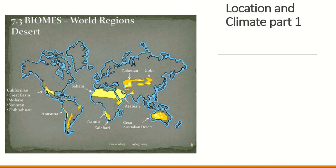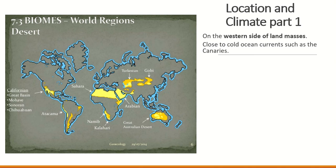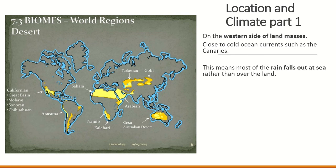So we've finished our introduction into the desert biome. We are now going into our second paragraph, which is on climate. We're going to talk a little bit about location as well. We're not going to do all of the location and climate today but we're going to do part one of it. So where can deserts be found? Deserts are found on the western side of land masses.